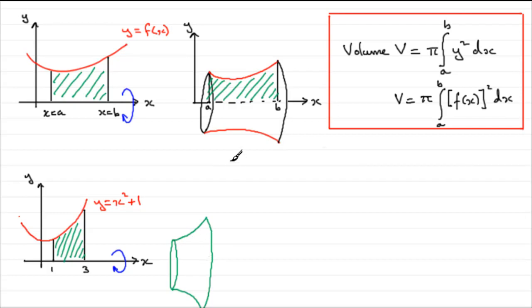Now the volume V, let's just put it up here, volume V is going to equal pi times the integral from 1 to 3 of y squared with respect to x. And y is x squared plus 1, so we're going to have to expand x squared plus 1 all squared before we can integrate it with respect to x.